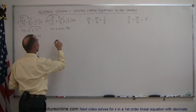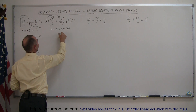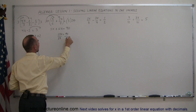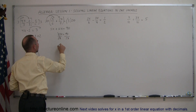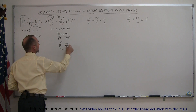You combine the x's on the left side, so that's 17x equals 90. Then you divide both sides by the numerical coefficient in front of the x. That cancels out, and x is equal to 90 divided by 17.